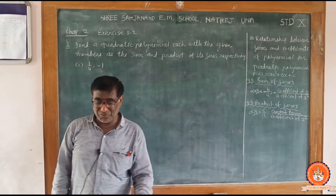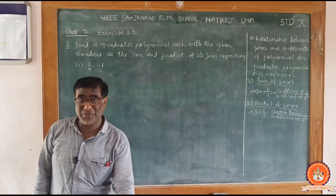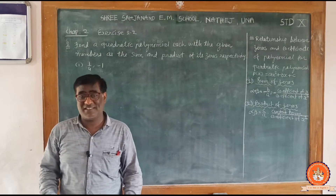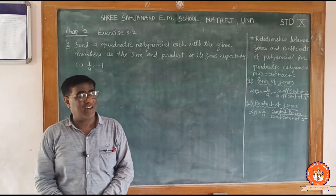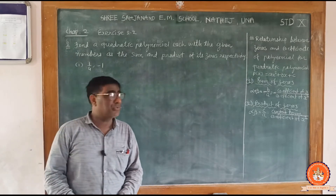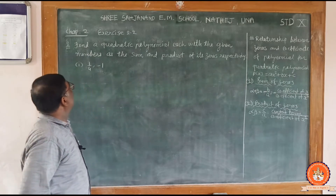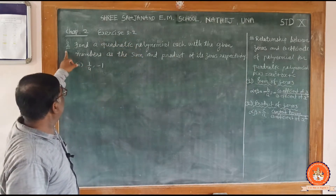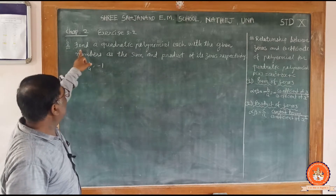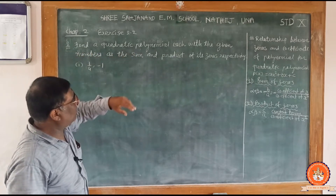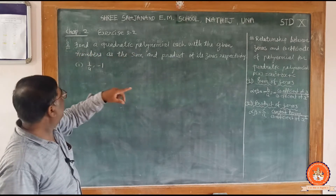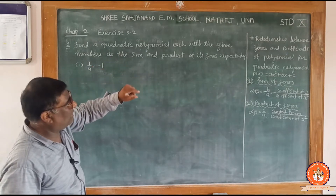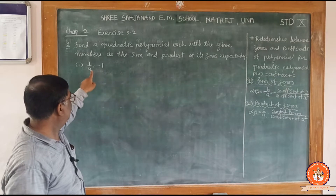Welcome to a new session of our learning process. We are in chapter number 2, exercise 2.2, question number 2: find a quadratic polynomial each with the given numbers as the sum and product of its zeros respectively.